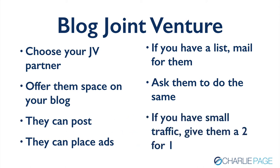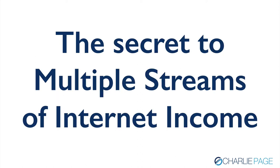If you have small traffic, you might be thinking — that sounds great, but I don't have many people coming to my blog. Give them a two-for-one. If you choose a JV partner who's much bigger than you from a traffic standpoint, say they've got twice as much traffic, put them on your blog twice as often or let them be on twice as long. You can make these things work out if you try. And these individual approaches work so much better than all those services where you log in and blast out a million messages — those don't work at all.